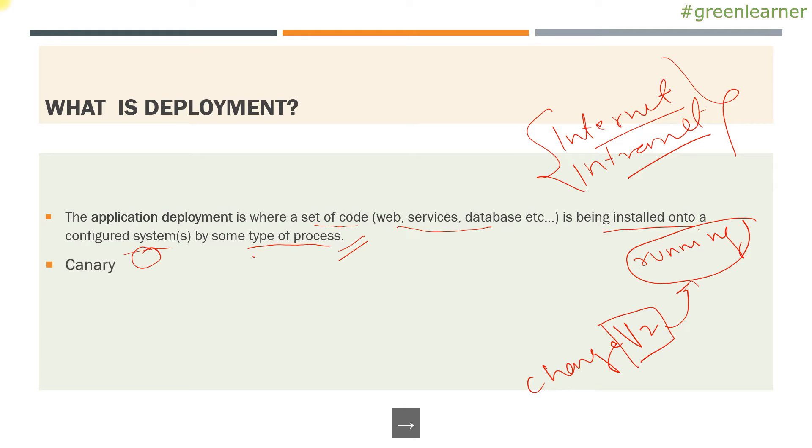So there are many deployment strategies: canary, AB and blue green. So there are many more also. Here we are mainly concerned about this blue green deployment. So let's go ahead and see what is this and why do we need it.